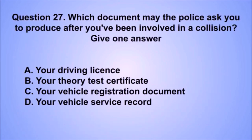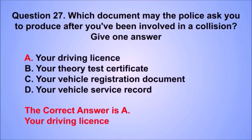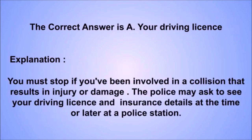Question 27. Which document may the police ask you to produce after you've been involved in a collision? The correct answer is A: Your driving license. You must stop if you've been involved in a collision that results in injury or damage. The police may ask to see your driving license and insurance details at the time or later at a police station.